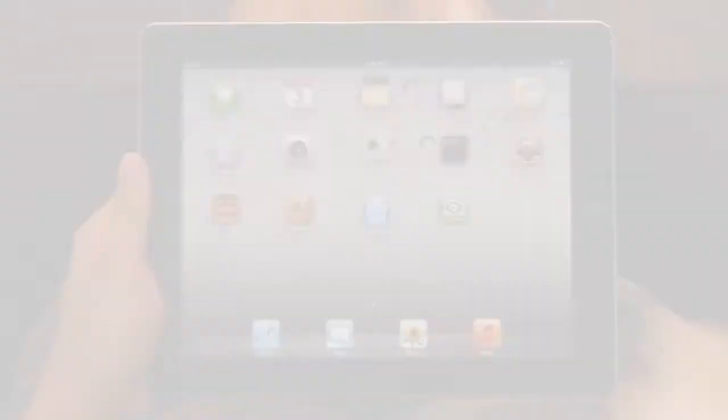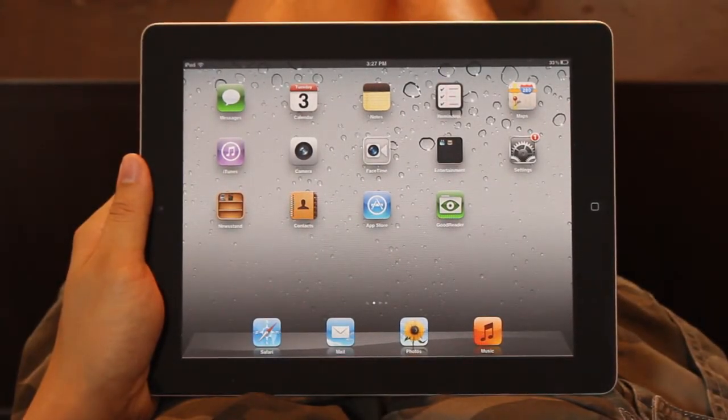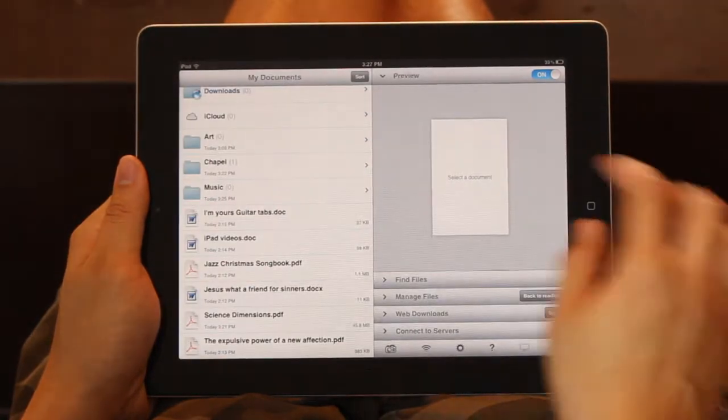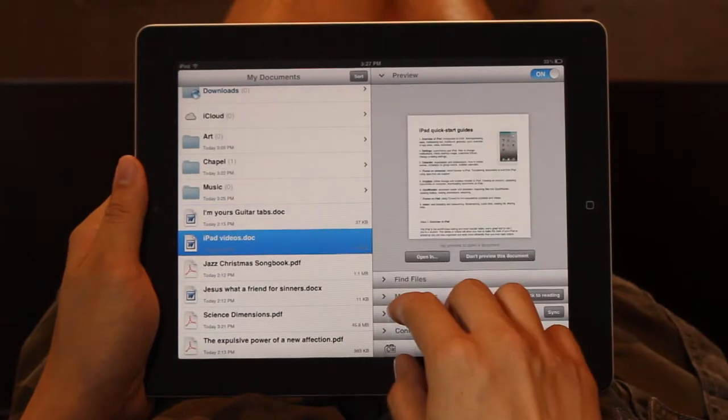Files can be transferred into Goodreader through iTunes or Dropbox, as shown in the previous two videos. Goodreader can handle almost every file type, but it really shines with PDFs.